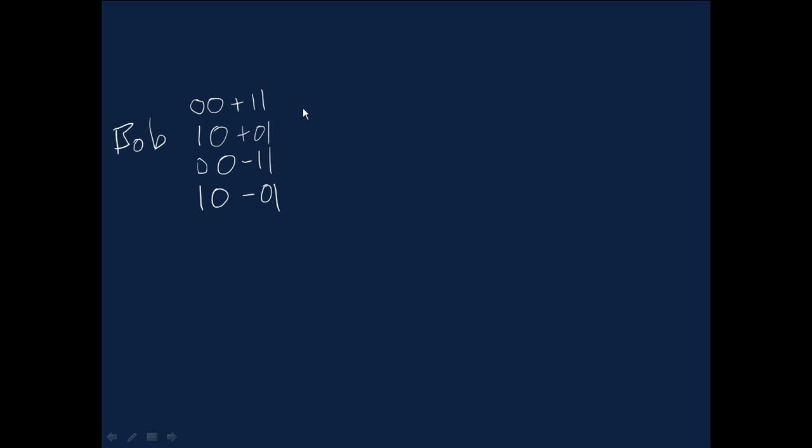Okay, so we've got one of these four quantum states. They're two qubit states, as you see. And in particular, what Bob does with these two qubits, first of all, is a controlled NOT gate, and then a Hadamard on the first, followed by a measurement.